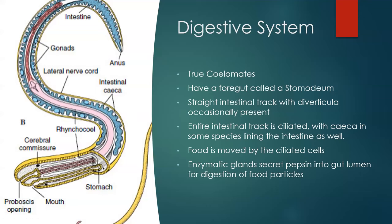The digestive system of nemerteans is very simple — it is a single longitudinal tube. The mouth may or may not share an opening with the proboscis. They do possess a foregut called the rhynchodeum. Their intestinal tract may have flaps called diverticula to aid in nutrient absorption, similar to folded intestines seen in other animals. Food is moved throughout the gut through ciliated cells that beat back and forth, and they use pepsin to digest most of their food particles.